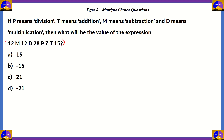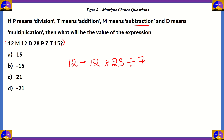Let's rewrite this based on the given information. 12 M becomes 12 minus; D means multiplication, so 12 multiplied by; then 28; P means division, so 28 divided by 7; and T means addition, so plus 15. The expression becomes: 12 − 12 × (28 ÷ 7) + 15.